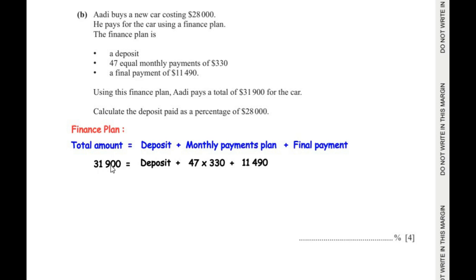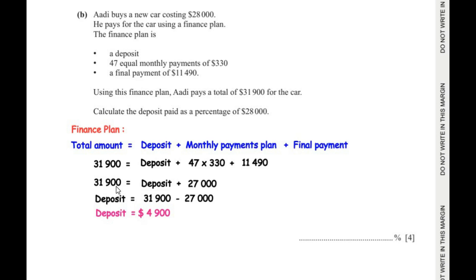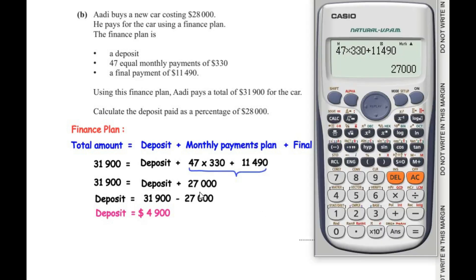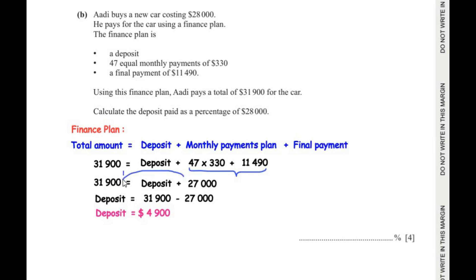The total amount paid is $31,900, which equals the deposit plus the monthly payments plus the final payment. So: $31,900 = deposit + (47 × $330) + $11,490. Simplifying, 47 × $330 + $11,490 gives us $27,000. Therefore, deposit = $31,900 − $27,000 = $4,900.